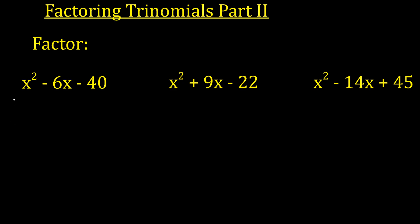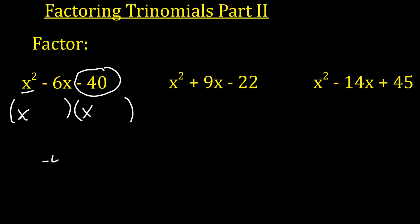We know that the factors of this polynomial are going to have x and x, because we've got to get x squared. The thing we talked about is we know it has to multiply up to negative 40. So what numbers multiply up to 40? Well, 1 and 40, 2 and 20, 4 and 10, 5 and 8. So if it's multiplying to negative 40, one of these numbers has to be negative and one positive. We're going to be using 4 and 10, where 10 is negative and 4 is positive.